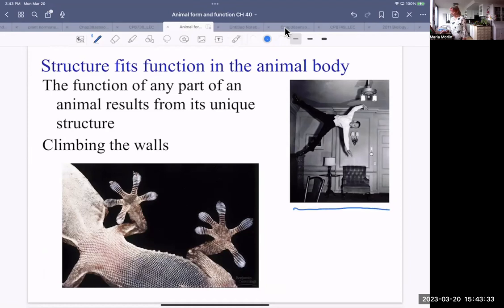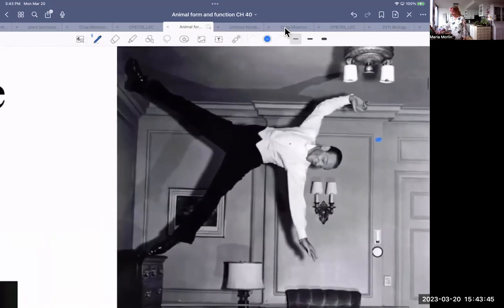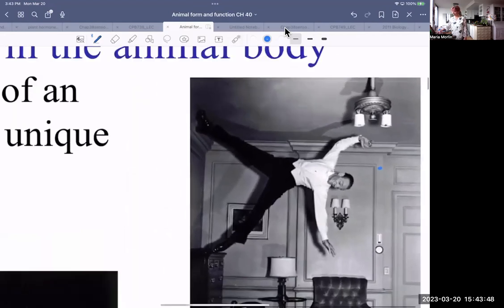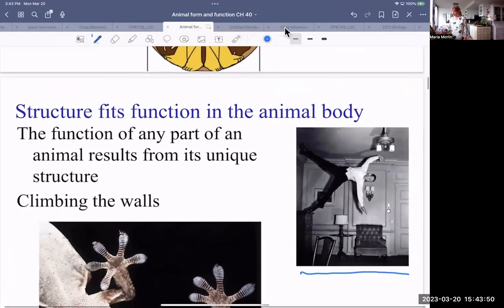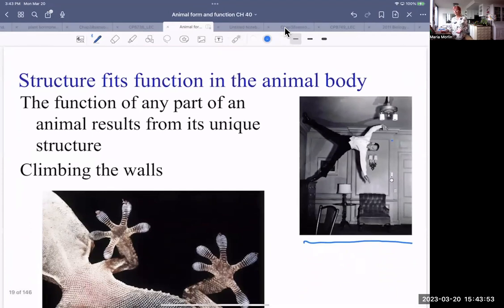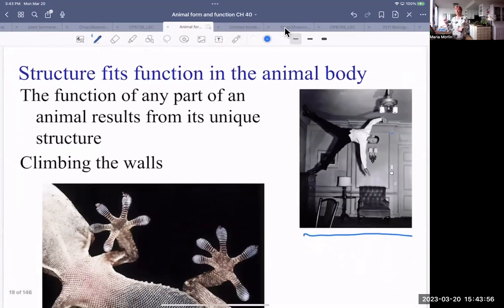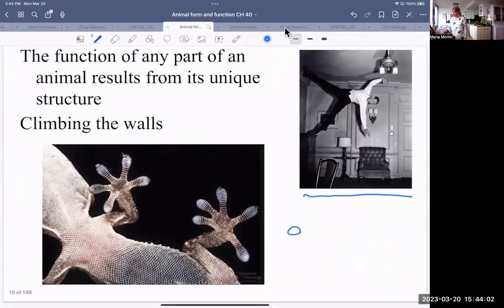I don't know if you recognize this person. You might be too young. That's Fred Astaire, and he did a movie where he was dancing. He was a famous dancer. And in some of the movie, he was dancing on the walls, and in some of the movie, he was dancing on the ceiling. Well, of course, he had a special constructed room with pulleys and wheels, so he was dancing and they moved the room around for him. But something like a gecko. This is Fred Astaire. And this is a gecko.